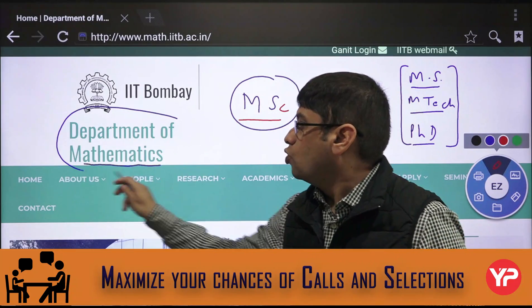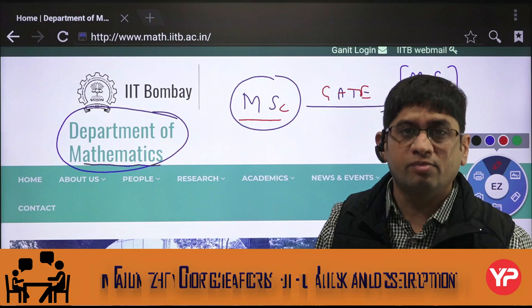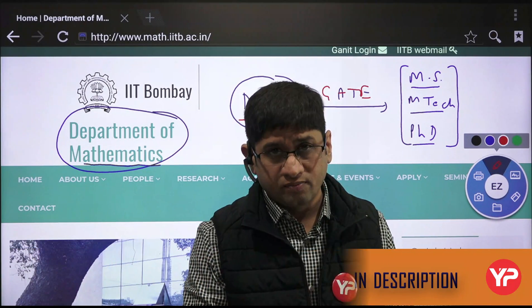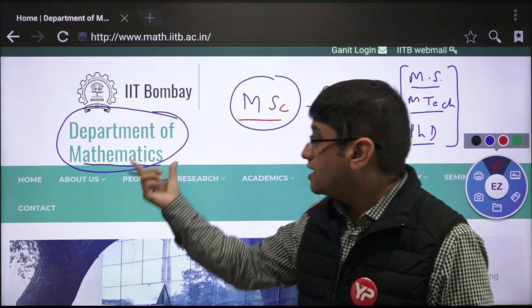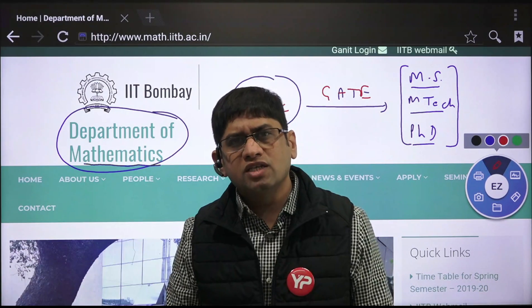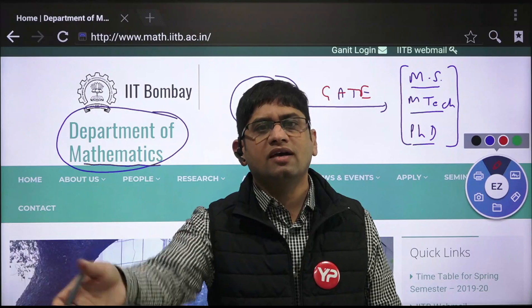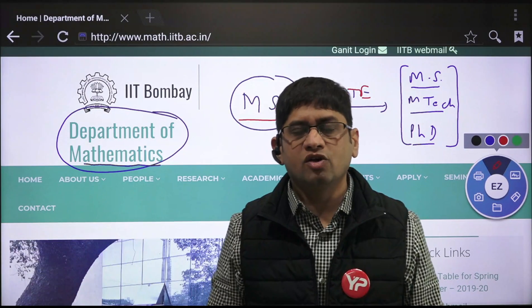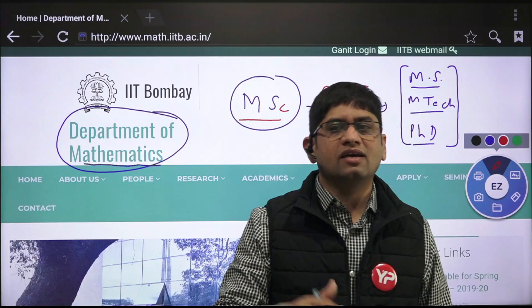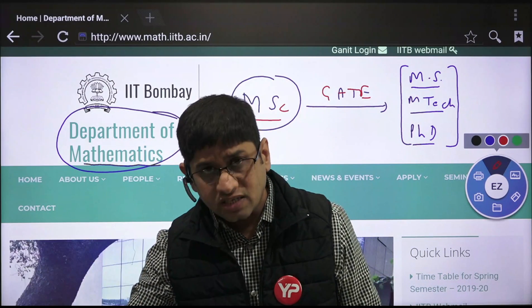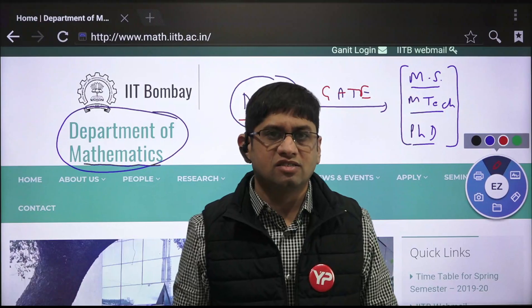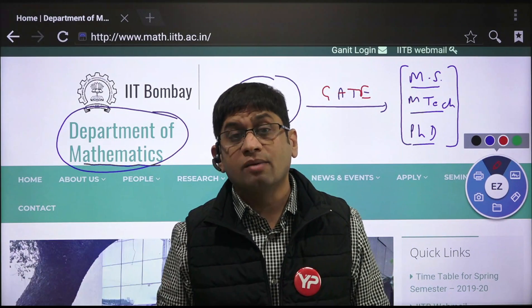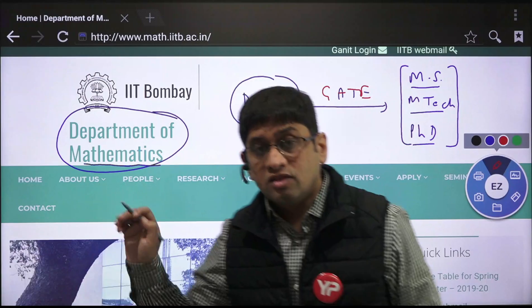Now, how many departments can you apply to, other than your core branch? For example, the department of mathematics — obviously MSc mathematics people can apply — but even engineering people can get into mathematics. There were many queries from BTech students asking how to get into mathematics. I will make a separate video for that, including cases like pursuing physics after BTech in chemical engineering. I will discuss professor profiles in that separate video.